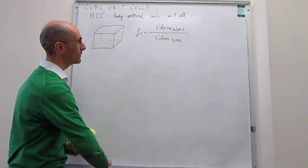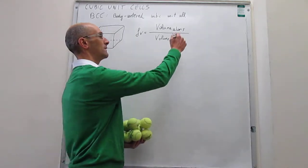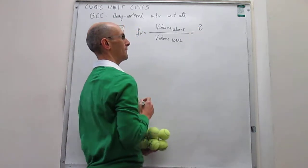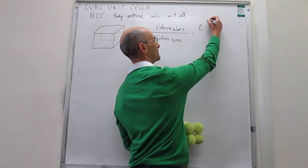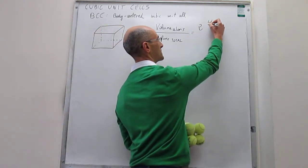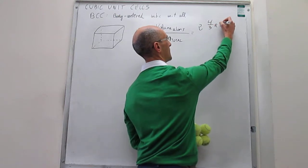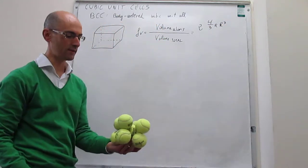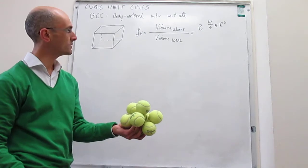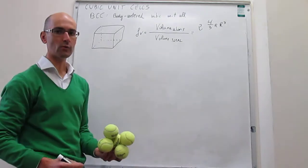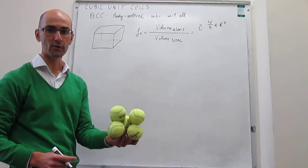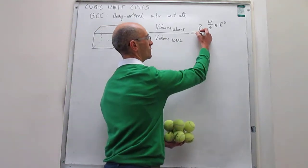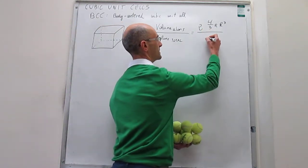We have two atoms per unit cell, and the volume of each atom is four-thirds π r³, where r is the radius of each atom. From here we simply have to calculate what the total volume of the body-centered cubic unit cell is, and then we'll be in business.